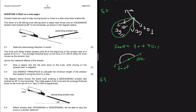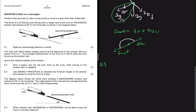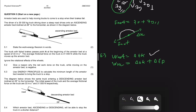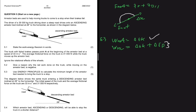Now for 5.3, we use energy principles to find the minimum length of the arrestor bed needed to bring the truck to a stop. There are two equations we can use: W_net = ΔEk, or W_nc = ΔEk + ΔEp. I'll use the first formula — try the second and check if you get the same answer.